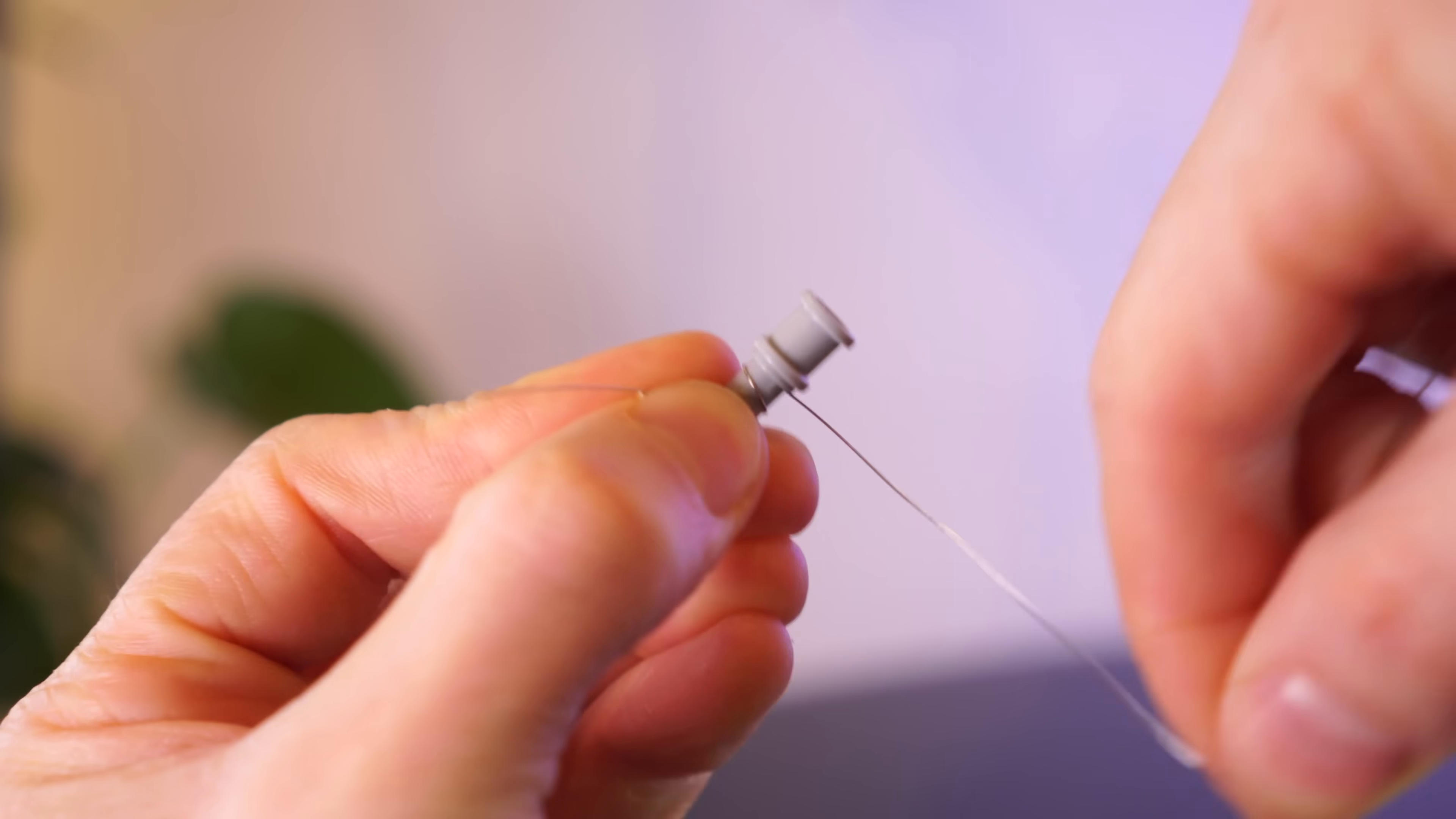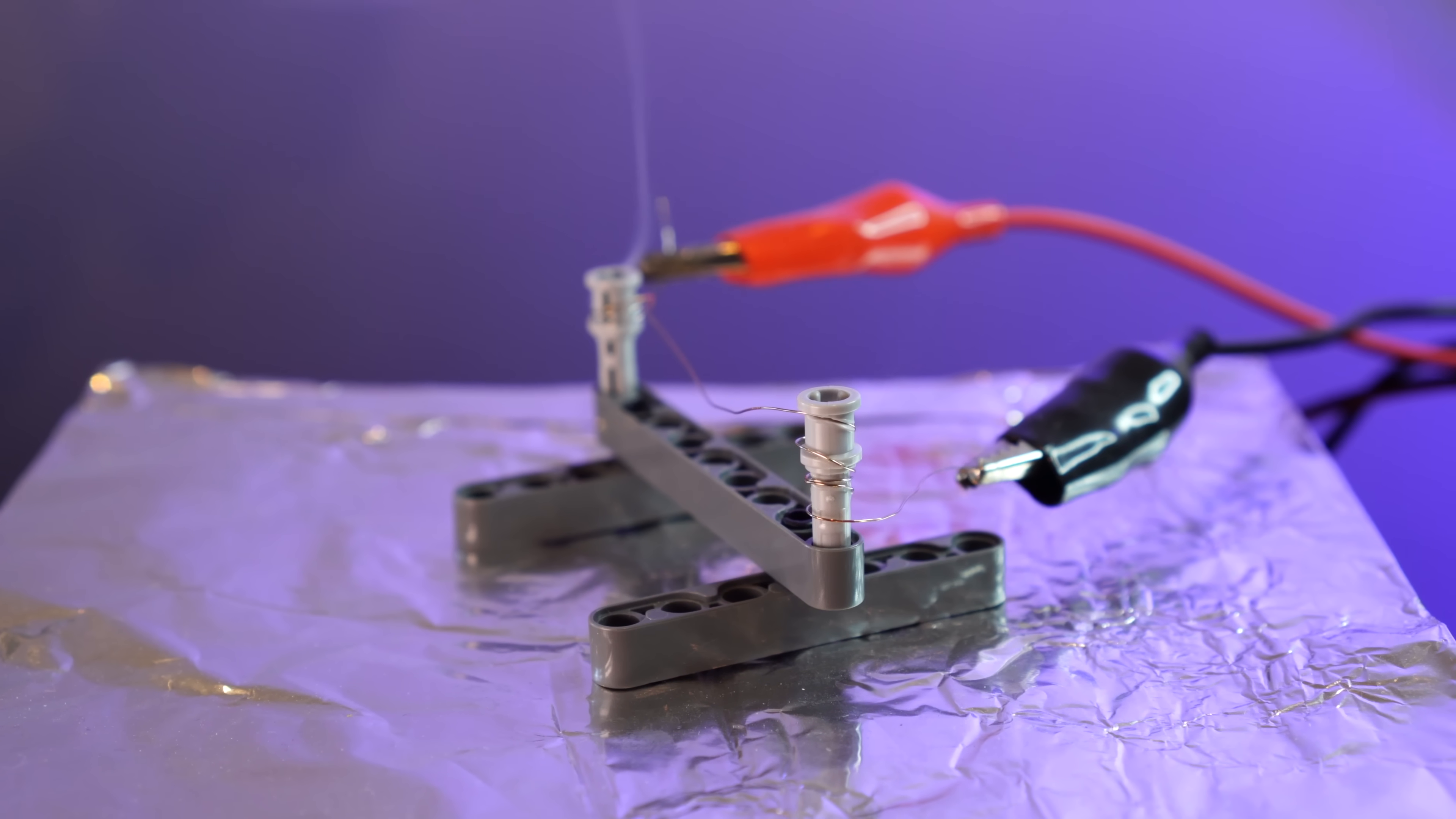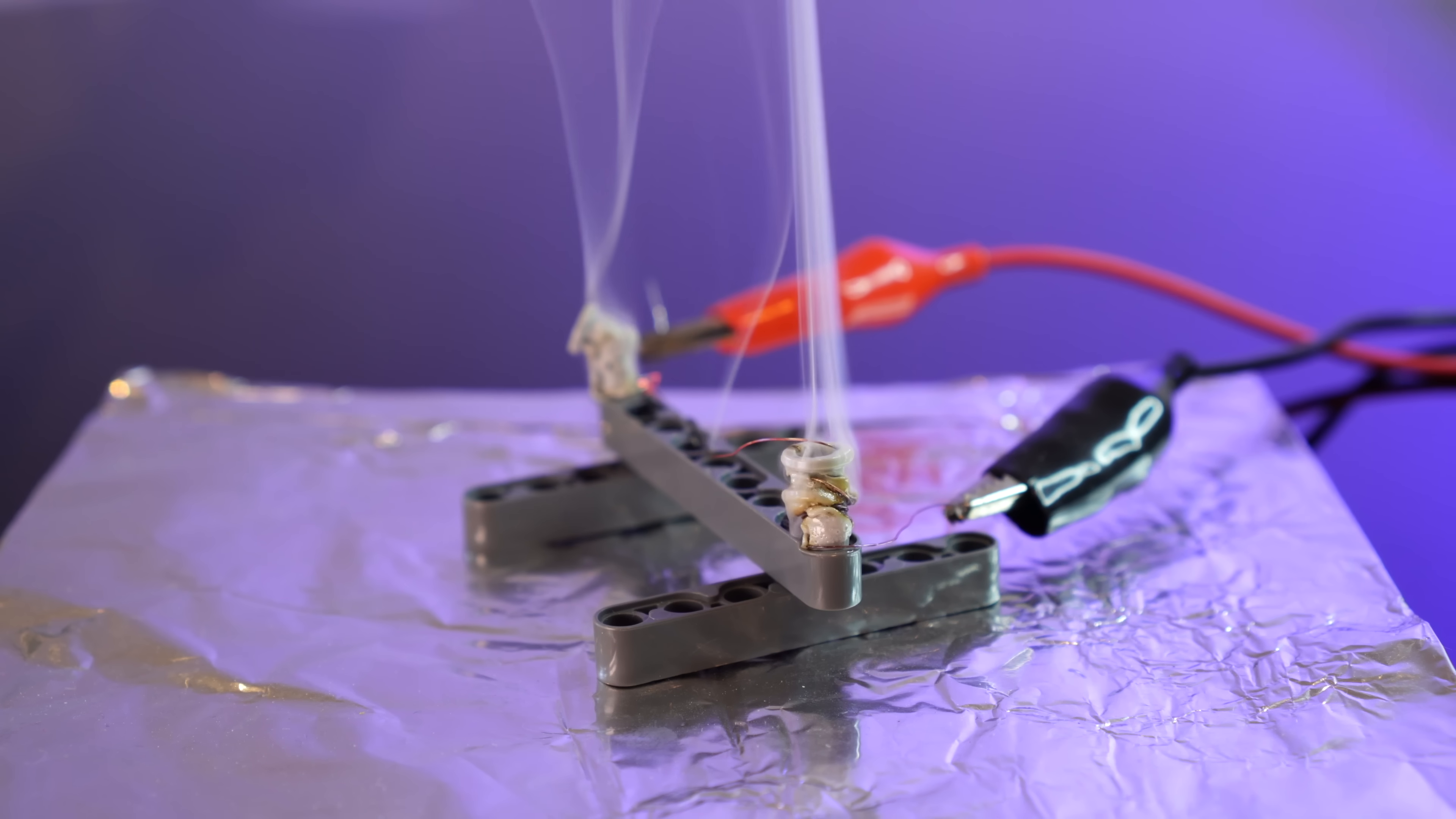So if we wrap this nichrome wire around some Lego mounts, creating a filament, and then hook up our power supply—okay, here we go, terrible idea—we get a meltingly hot strand of wire. This is what they use in toasters and hairdryers, and surprise surprise, Lego doesn't fare so well.